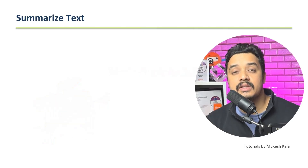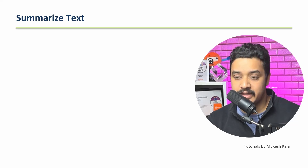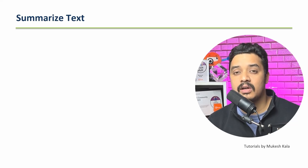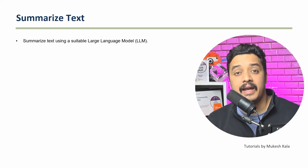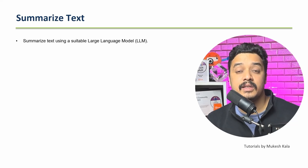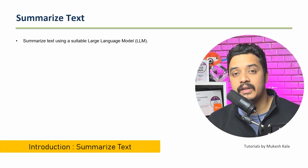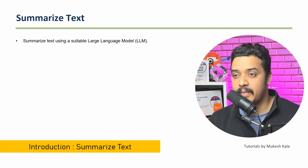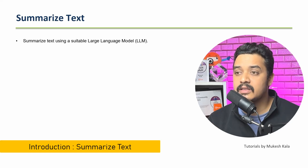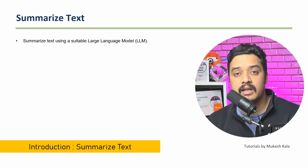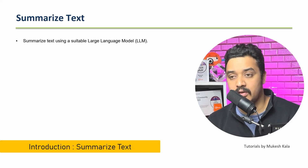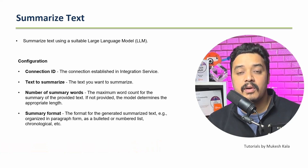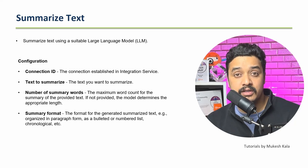So today we are going to discuss the activity called Summarize Text. As the name suggests, this is an activity in the UiPath Generative Activity Pack which will actually summarize text using a suitable large language model. If we talk about the configuration, it is only going to ask you for the connection ID.